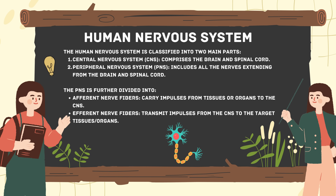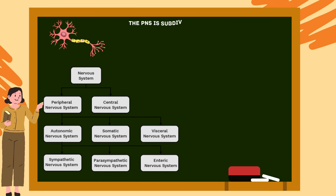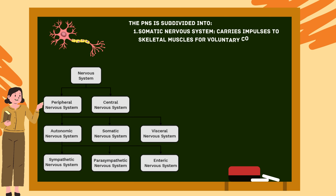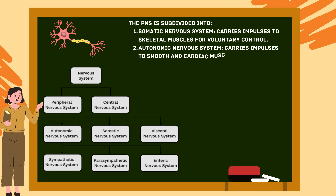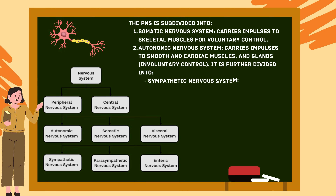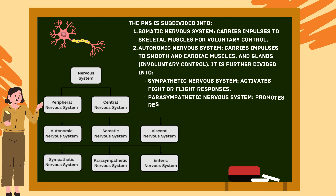Afferent nerve fibers transmit impulses from the CNS to the target tissues and organs. The PNS is subdivided into the somatic nervous system, which carries impulses to skeletal muscles for voluntary control, and the autonomic nervous system, which carries impulses to smooth and cardiac muscles and glands for involuntary control. This is further divided into the sympathetic nervous system, which activates fight-or-flight responses, and the parasympathetic nervous system, which promotes rest-and-digest responses.